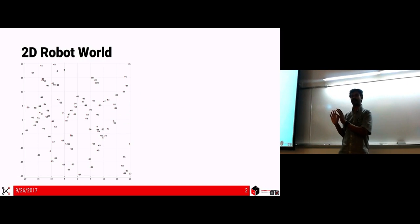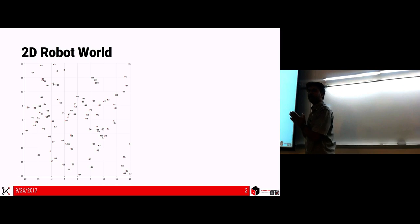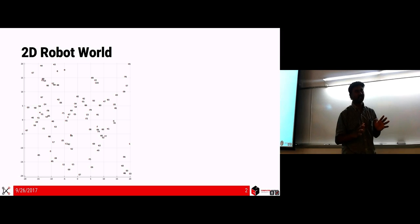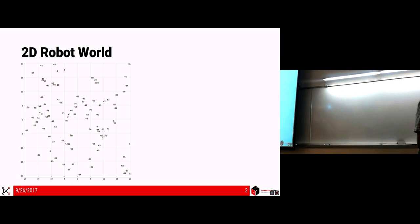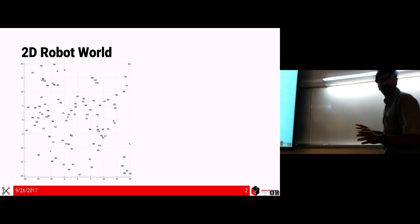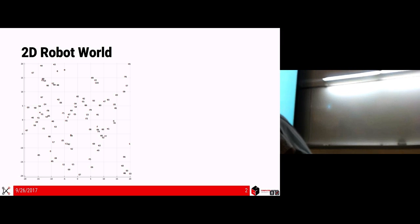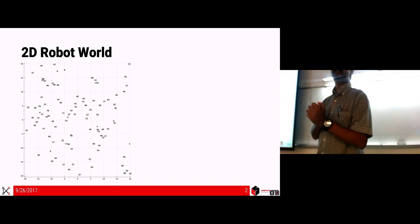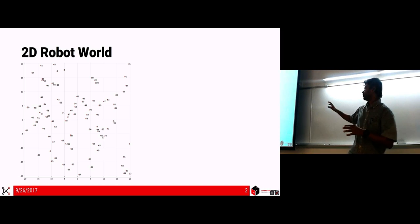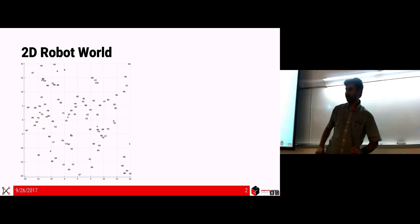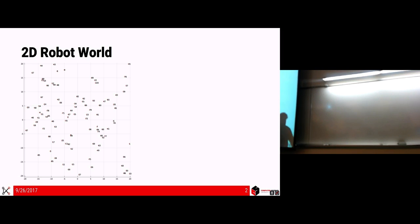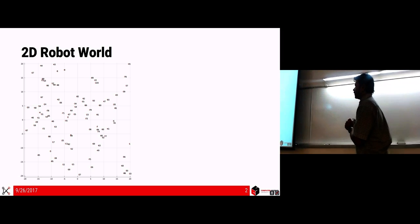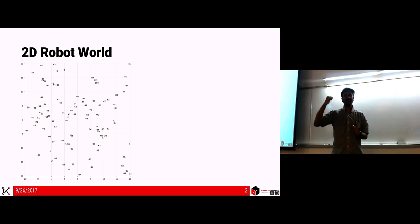This setup is basically what you'll be using in homework one, and a different version is what you'll be doing in project two phase one. You have a 2D world with some landmarks — those X's on the board. Those are landmarks, and one thing to note is that these are unique landmarks, meaning each one is numbered.